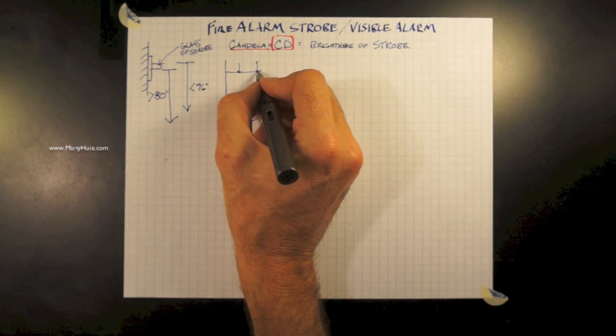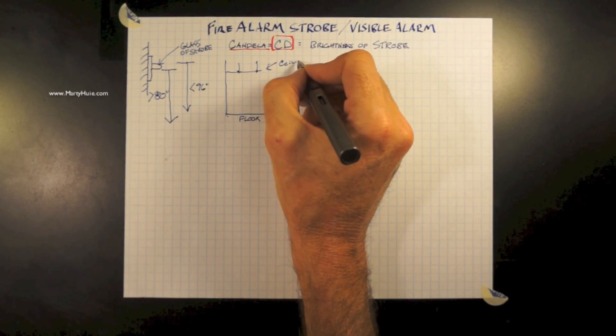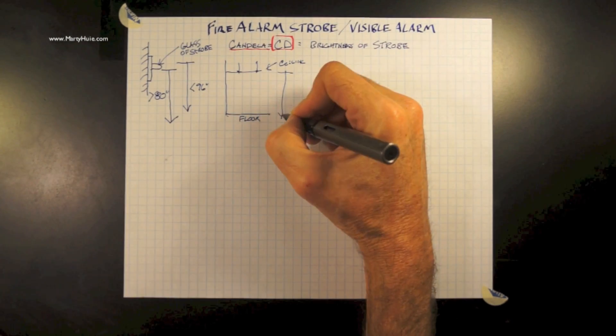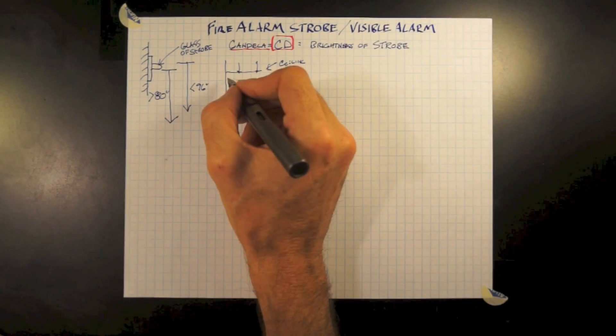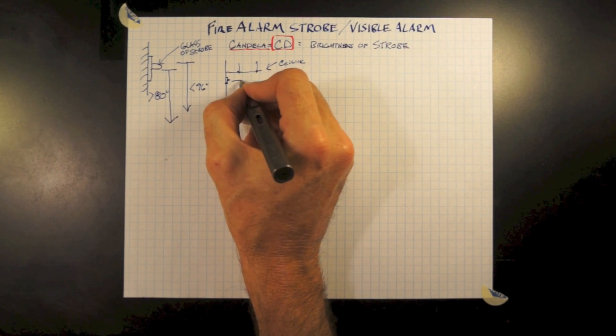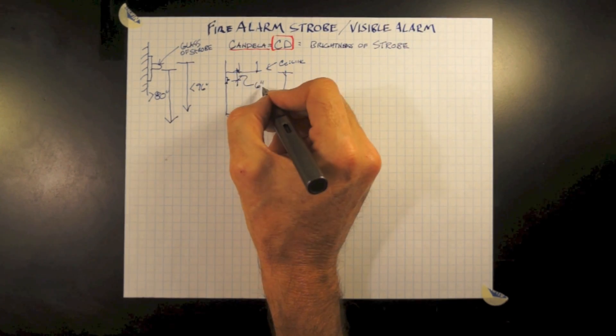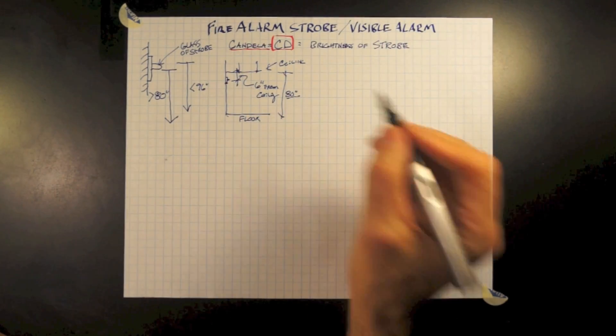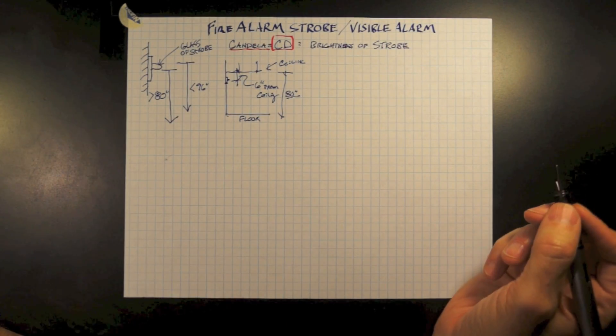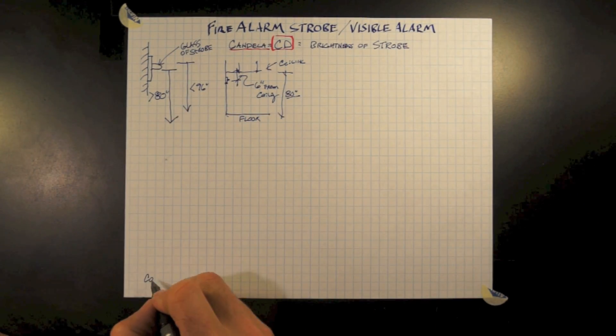There is an exception. When your ceiling height is below or right at 80 inches, 6 feet 8, where can your strobe go? Your strobe is allowed by exception to be only 6 inches below the ceiling. It can't be 7, it can't be 8. It can be within 6 inches of the ceiling.